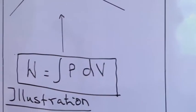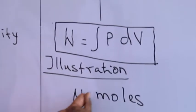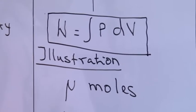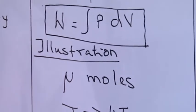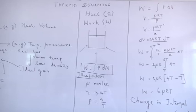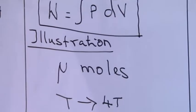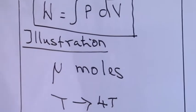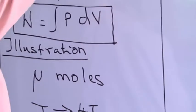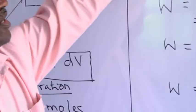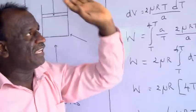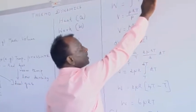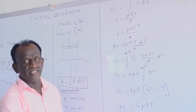As a matter of illustration, here μ number of moles are given. I want to find the work done while the gas expands from an initial temperature T to a final temperature 4T, while the pressure is fixed in terms of temperature as P = A/T. The amount of work is given by W = ∫P dV. The simple logic in these types of problems is you have to change the change in volume into a change in temperature.